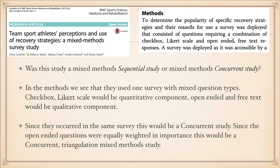From the methods section: 'To determine the popularity of specific recovery strategies and the reasons for use, a survey was deployed that consisted of questions requiring a combination of checkbox, Likert scale, and open-ended free text responses.' This tells us that they did one survey one time, and this survey included both quantitative questions — the checkbox and Likert scale — as well as open-ended free text questions. The qualitative component would be the open-ended questions where participants were allowed to elaborate on the reasons for their choices.